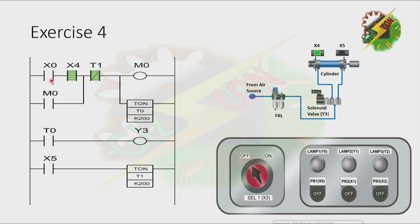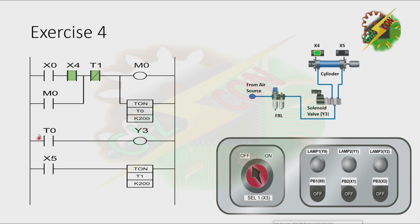When we press PB1 or X0, M0 will be activated. Because there is a latching, M0 will not be turned off even if X0 or X4 is not activated anymore. Timer 0 will be activated after 2 seconds. If Timer 0 is activated, Y3 will turn on and that will cause the cylinder to extend. When the cylinder reaches its fully extended position, it will activate T1 after 2 seconds. When T1 is activated, the normally closed T1 contact will open, causing M0 to turn off, and Timer 0 to turn off also. When T0 is not activated anymore, the normally open contact of T0 will turn off, causing Y3 to turn off and the cylinder to retract.